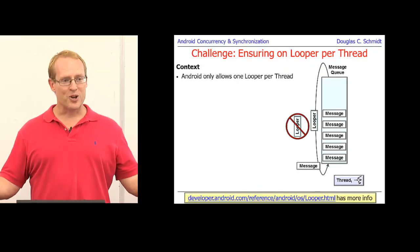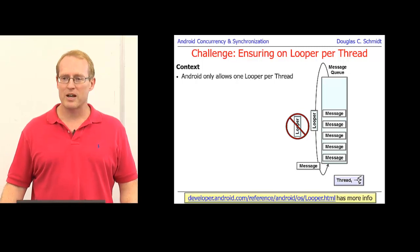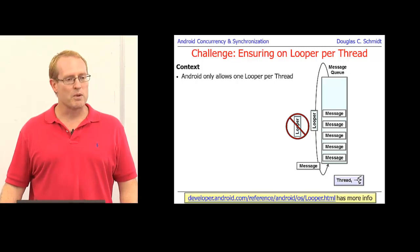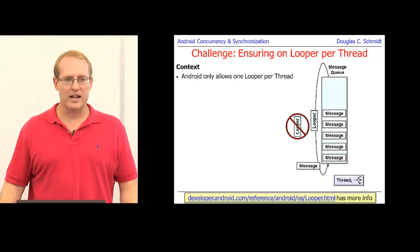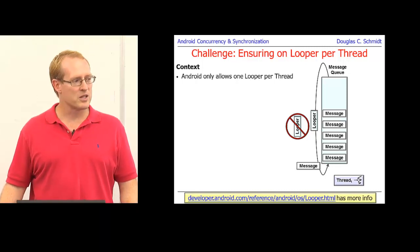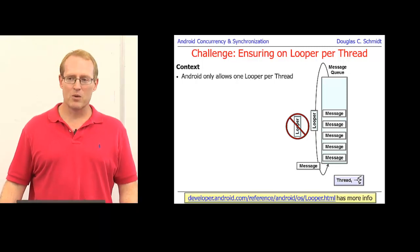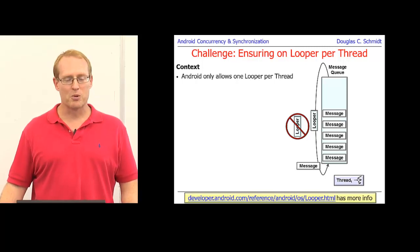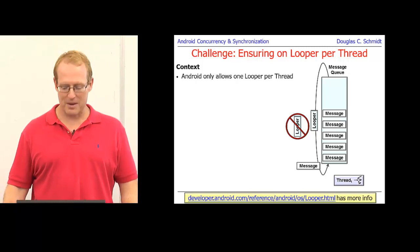Speaking of the looper, we're going to start off by talking about loopers. You may remember from last class I mentioned how there can only be one looper per thread in Android. If you take a look at the documentation, it explains that fact. If you poke around on Stack Overflow, you'll see a lot of people complaining about there only being one looper and running across problems. Stack Overflow has a lot of good discussion of this topic.